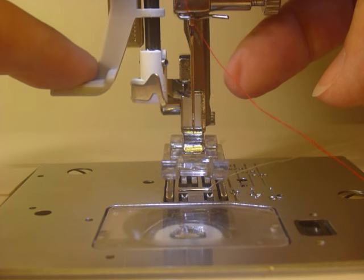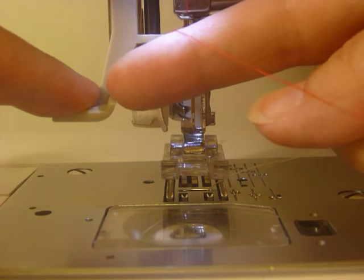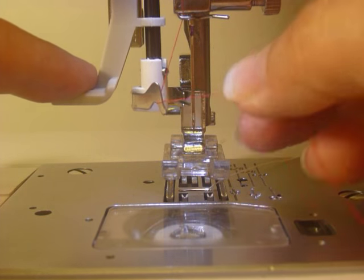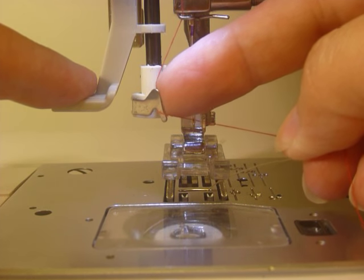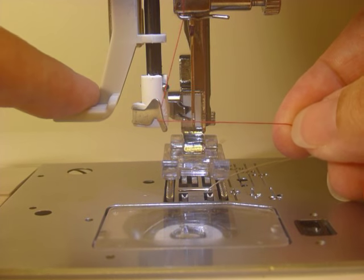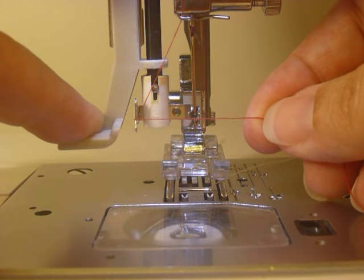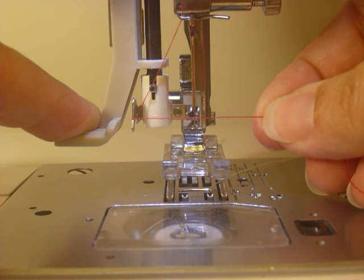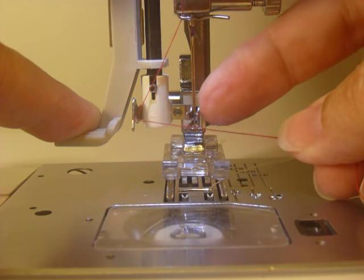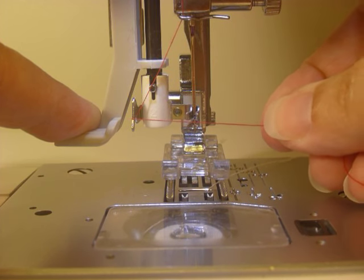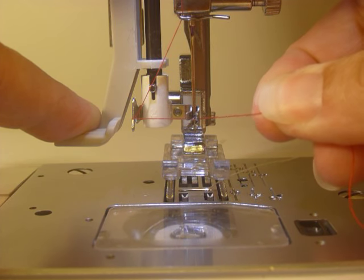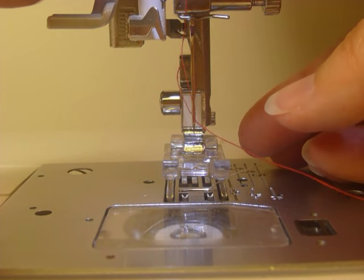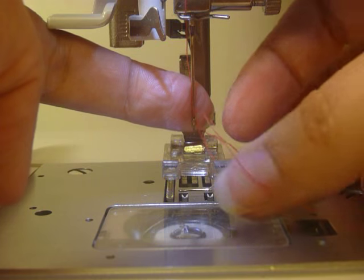You're going to gently pull down this lever on the left and loop the thread underneath this silver hook. Now as you press down the whole thing spins and right between this little fork you will hook your thread into the little hook that's in between that fork and let go and the needle will be threaded.